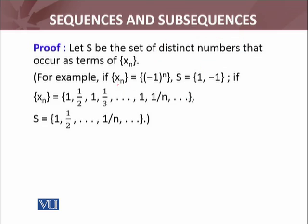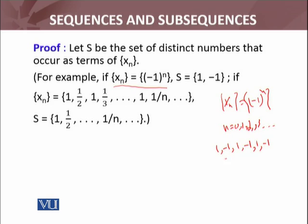For example, if our sequence XN is defined by XN = (-1)^N, and we put N = 0, 1, 2, 3, and so on, the values we get are 1, -1, 1, -1, 1, -1, and so on. So you will always have 1 and -1. The distinct numbers of that sequence XN form the set {1, -1}.